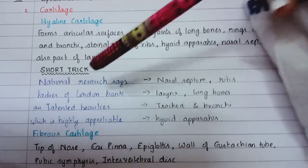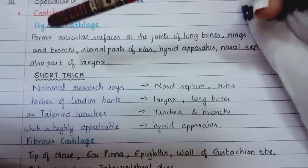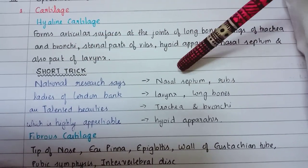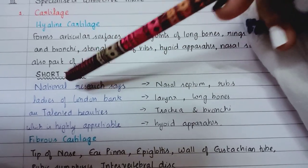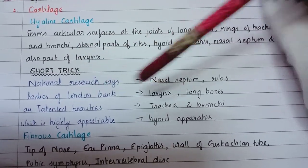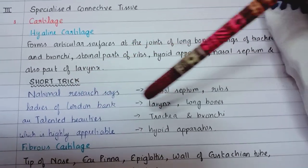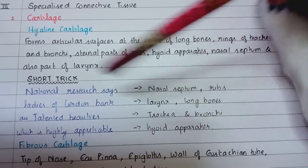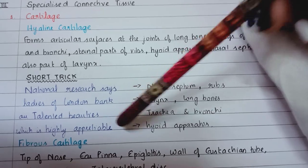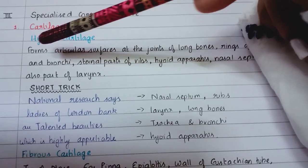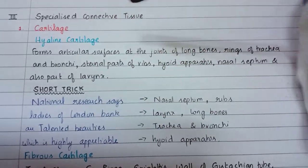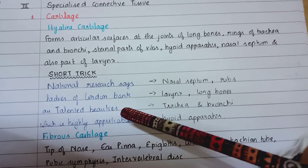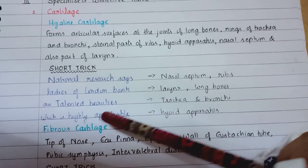Breaking down the hyaline cartilage mnemonic: National for nasal septum, Research for ribs, Ladies for larynx, London for long bones, Bank for bones, Talented Beauties for trachea and bronchi, Highly Appreciable for hyaline apparatus. So: National Research Says Ladies of London Bank Are Talented Beauties, Which Is Highly Appreciable.